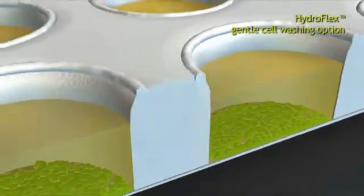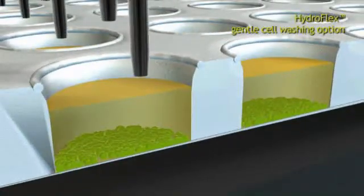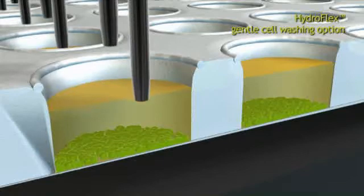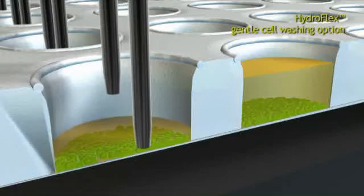Gentle cell washing is implemented by a gentle wash step. While aspirating, the wash head moves down millimeter by millimeter. While dispensing, the wash head moves up with the rising liquid level.